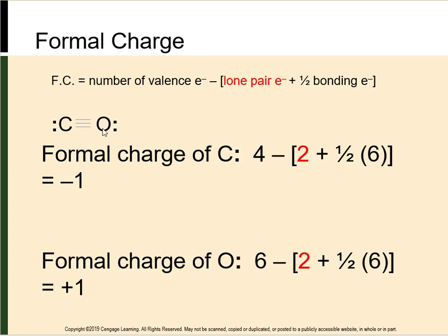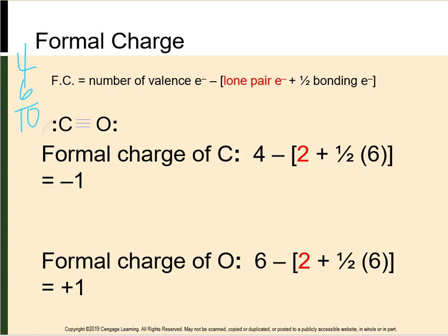We have CO. If we go back and think about how we drew CO in the last lecture: carbon had 4 valence electrons and oxygen had 6, giving 10 electrons total. We drew carbon with a triple bond — that's 6 for carbon plus the lone pair is 8. And for oxygen, that triple bond is 6 plus 2 is 8. So it was tricky to write, but now let's calculate the formal charge of each atom.